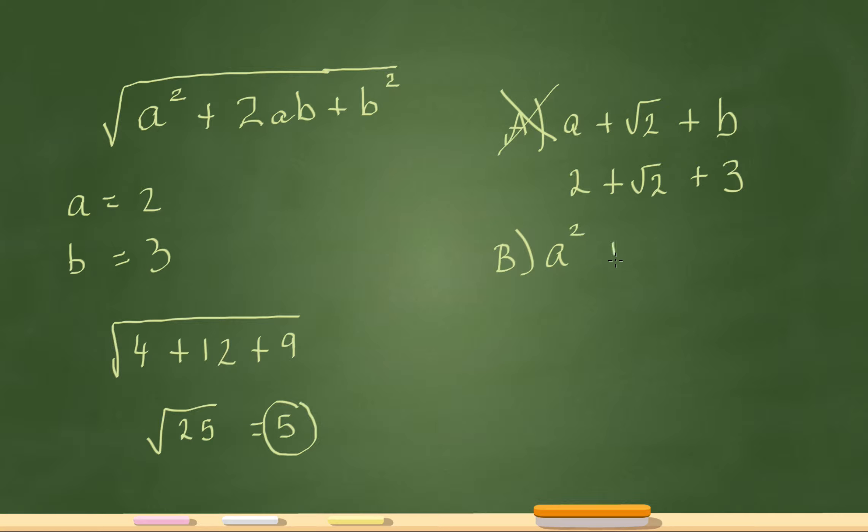Then I go to B. B is a squared plus b squared which is going to be 2 squared which is 4 plus 3 squared which is 9, and that's not going to be 5, so that's gone. Let's go to C. C is a plus b which is 2 plus 3 which is 5. So I know my answer most likely is C, but let me just show you why D doesn't work.